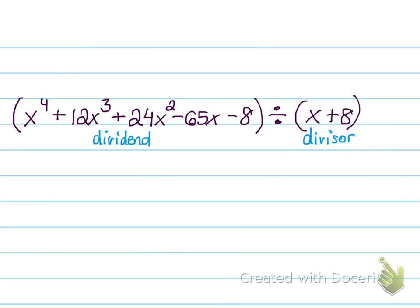All right, let's look at our first example. It says x to the fourth power plus 12x cubed plus 24x squared minus 65 minus 8, that's my dividend, divided by x plus 8, which is my divisor.